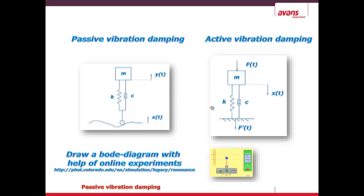In this video I'm going to discuss how to draw a Bode diagram of passive vibration damping. This is an image of passive vibration damping — a wheel is, for example, following a certain path which causes a vibration in a construction, in a mass, through a spring and a damper.